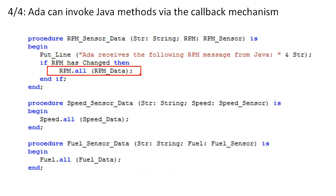By calling RPM.all, we are calling Java — after all, there is no sub-program on the ADA side with that name. Based on program logic in this procedure, Java could choose not to make this call. Although Java initiated the event by calling RPM sensor data, ADA will decide if the callback is invoked on the Java side.